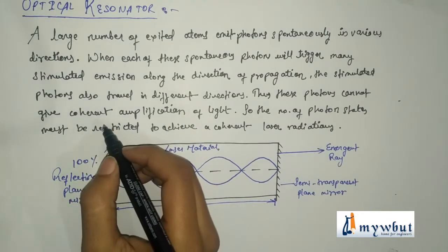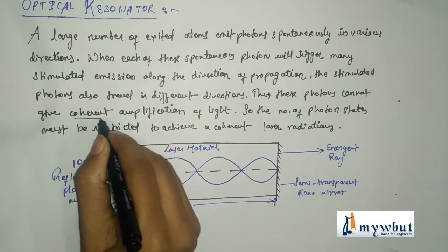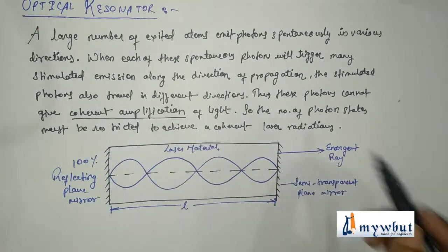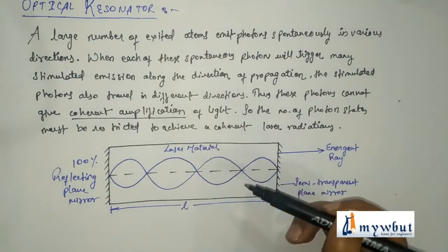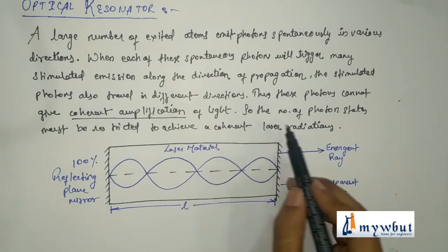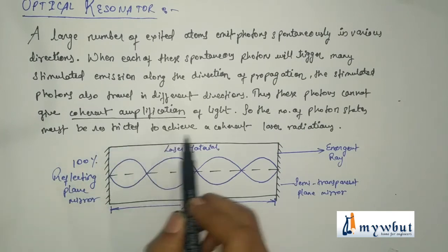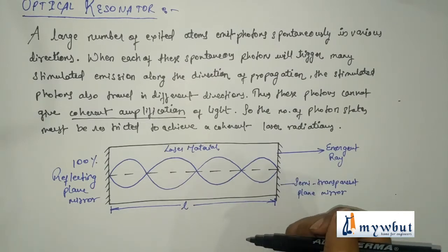We have already explained that coherent amplification is a necessary condition for laser production. Since it is scattering in different directions, coherent amplification is not taking place of light. So the number of photons must be restricted to achieve a coherent laser radiation. This is the necessity of having an optical resonator.